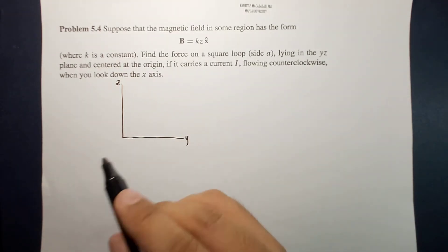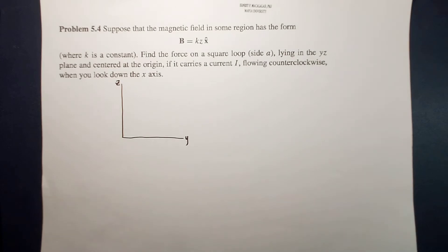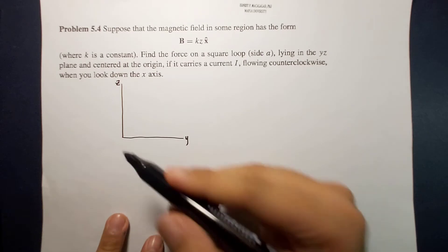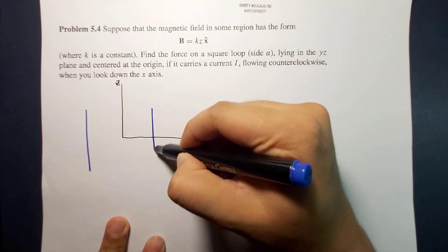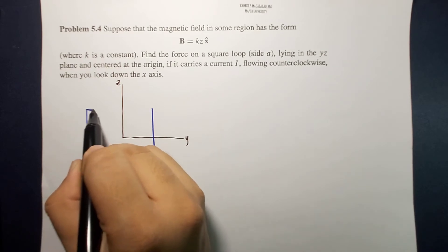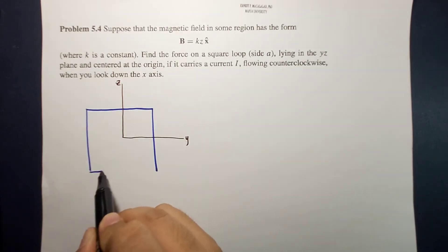So this is y and z, and out of the page is your x-axis. So this is a view looking down the x-axis. Now it is mentioned here that the square loop is centered at the origin.